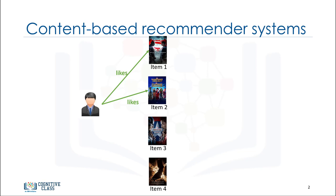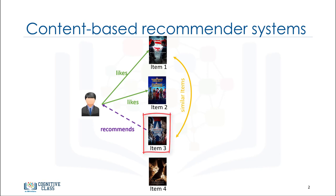For example, if we have four movies, and if the user likes or rates the first two items, and if item 3 is similar to item 1 in terms of their genre, the engine will also recommend item 3 to the user. In essence, this is what content-based recommender system engines do.